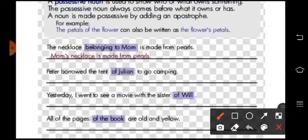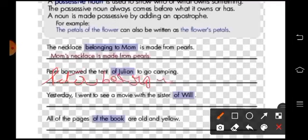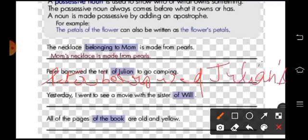Next is Peter borrowed the tent of Julian to go camping. So what should we write here? Yes, so Peter borrowed Julian's tent. We write here Julian's, we write apostrophe s, to go for camping.